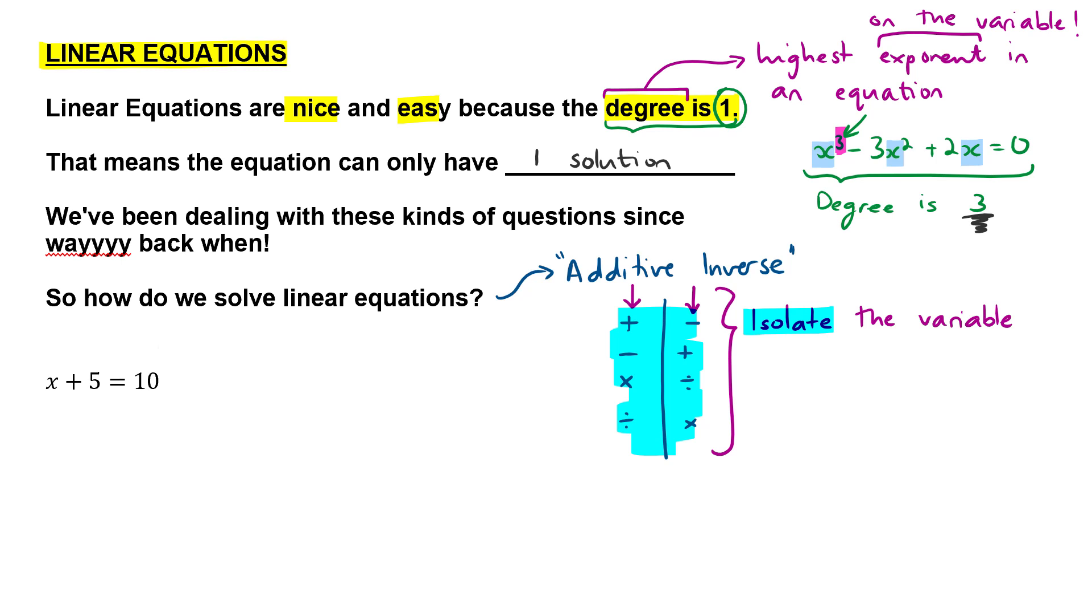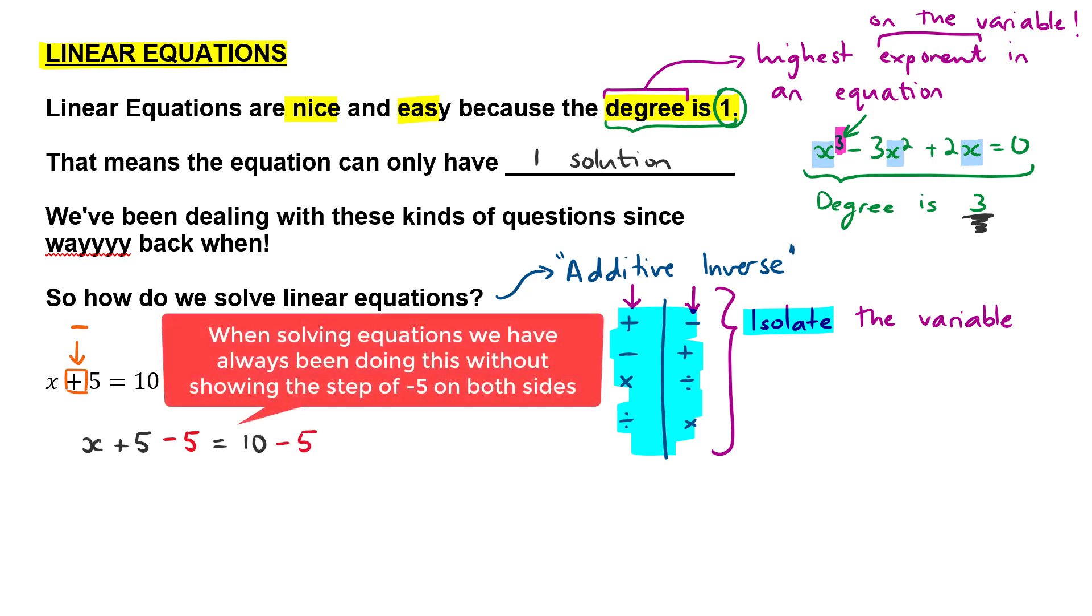So we look at this equation, we've got x plus five equals 10. So we've got a plus here, the opposite operation is a minus. And what we do on one side of an equation, we do on the other. So we would go x plus five, then use our opposite operation, which would be minus five equals 10 minus five.